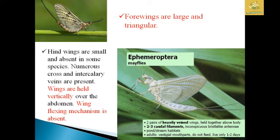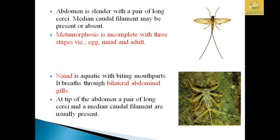The forewings are large and triangular in shape. The hindwings are small and absent in some species. Numerous cross veins and intercalary veins are present. The wings are held vertically over the abdomen. The wing flexing mechanism is absent. The abdomen is slender with a pair of cerci and the median caudal filament may be present or absent.